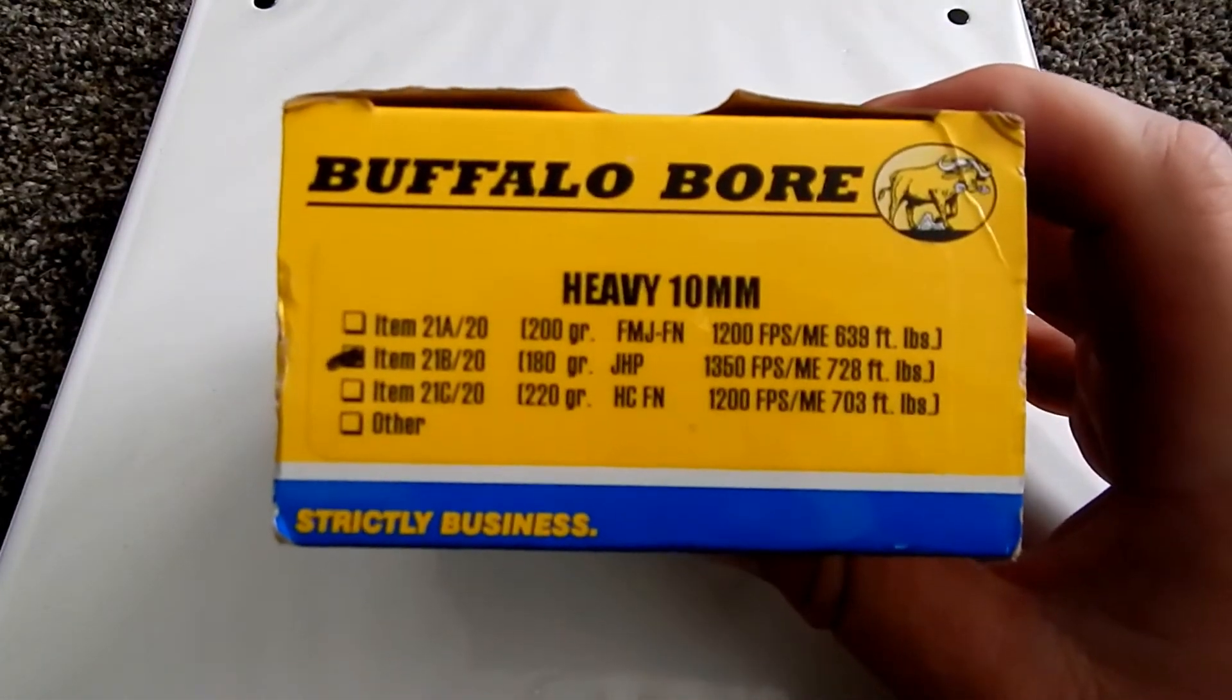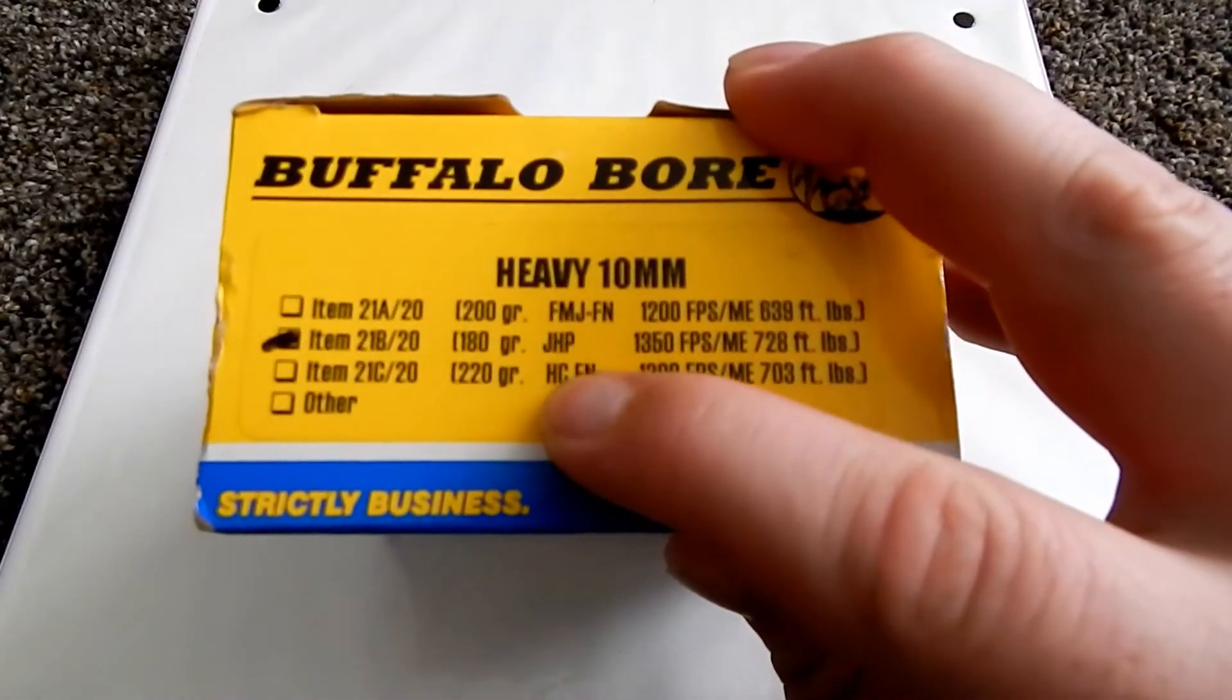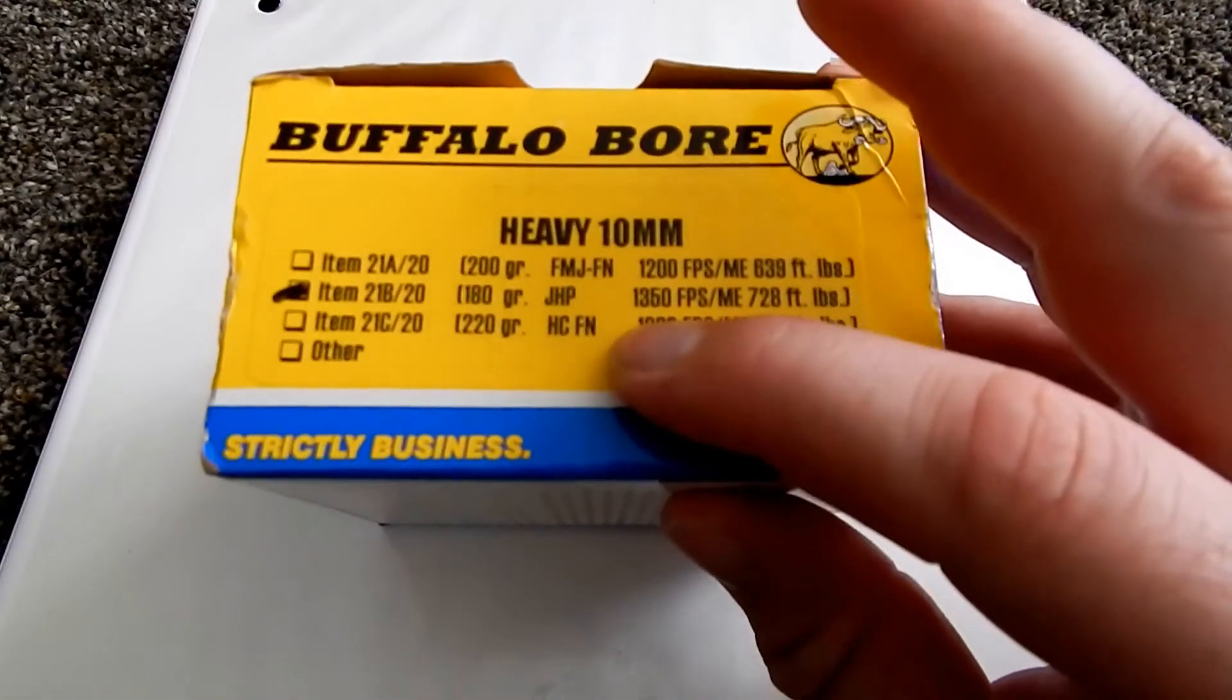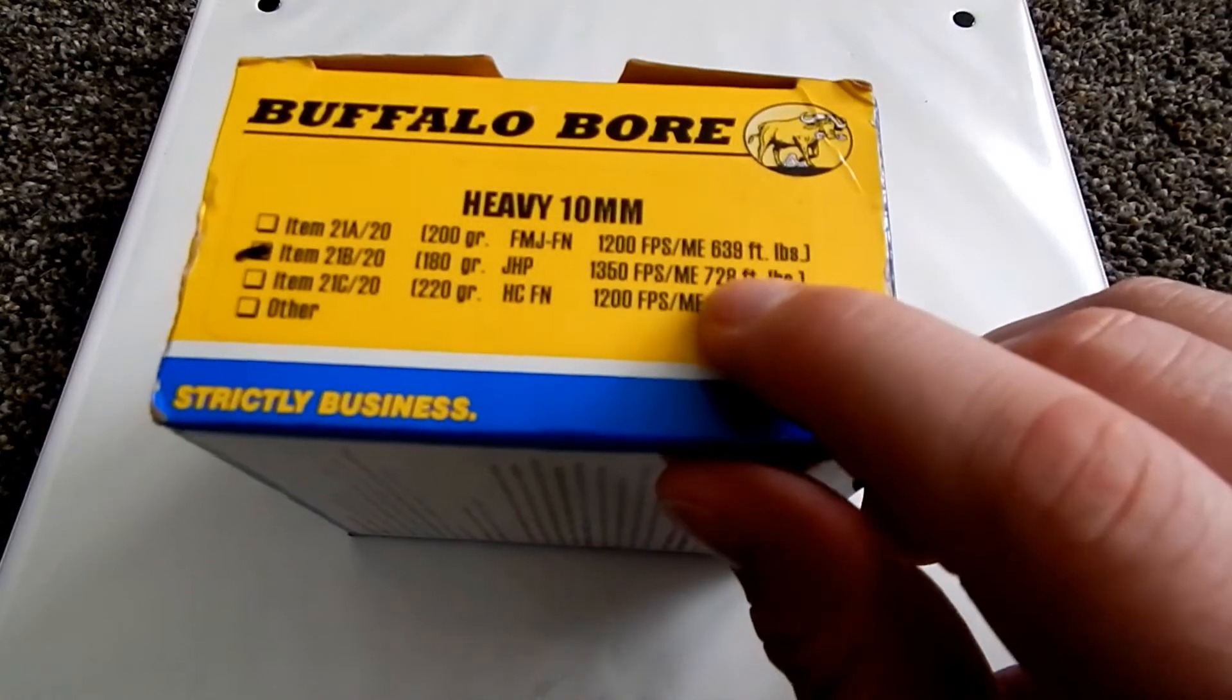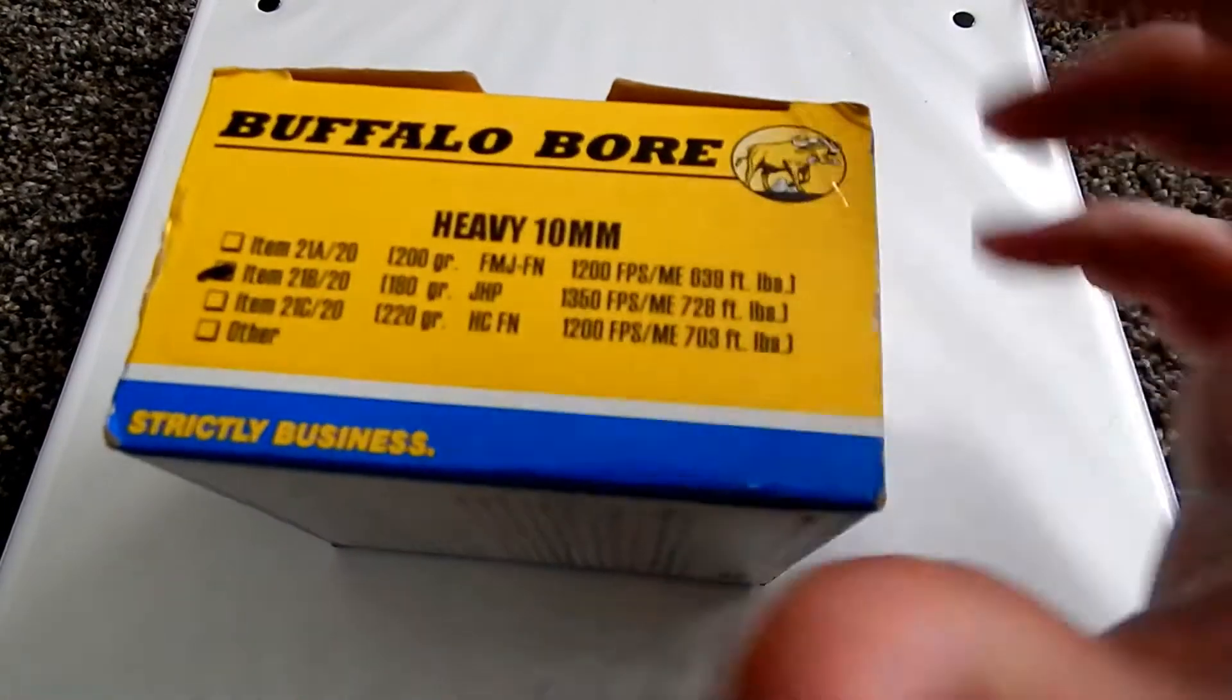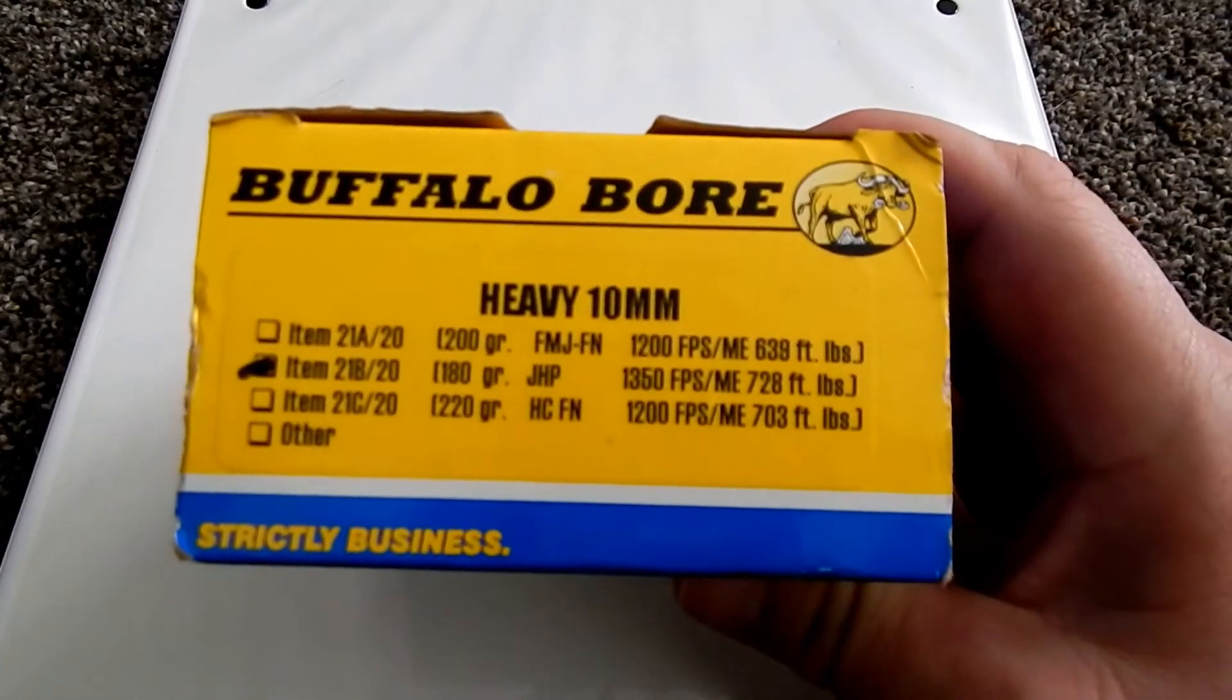Here's an example from Buffalo Bore. This is I had some 180 grains, 1350 feet per second, the muzzle energy came up to be about 728 foot pounds energy.